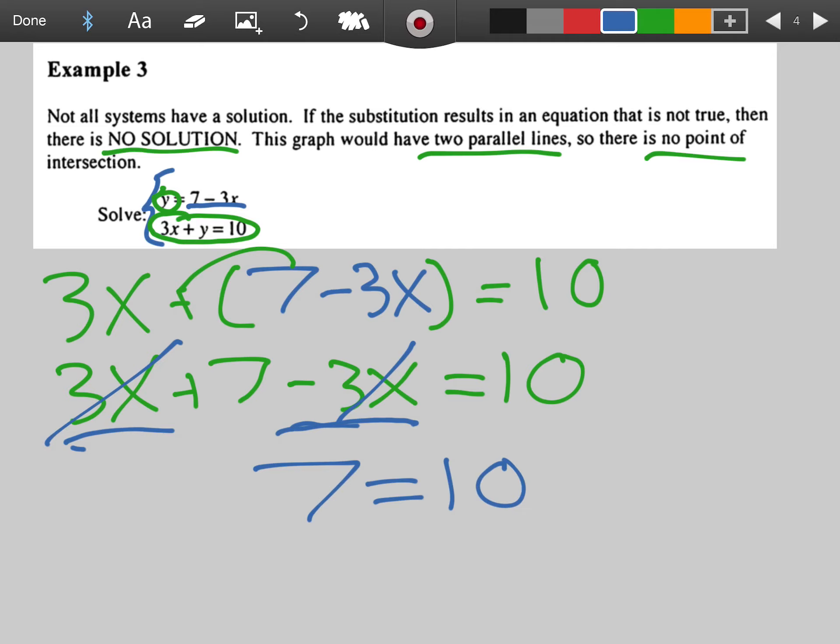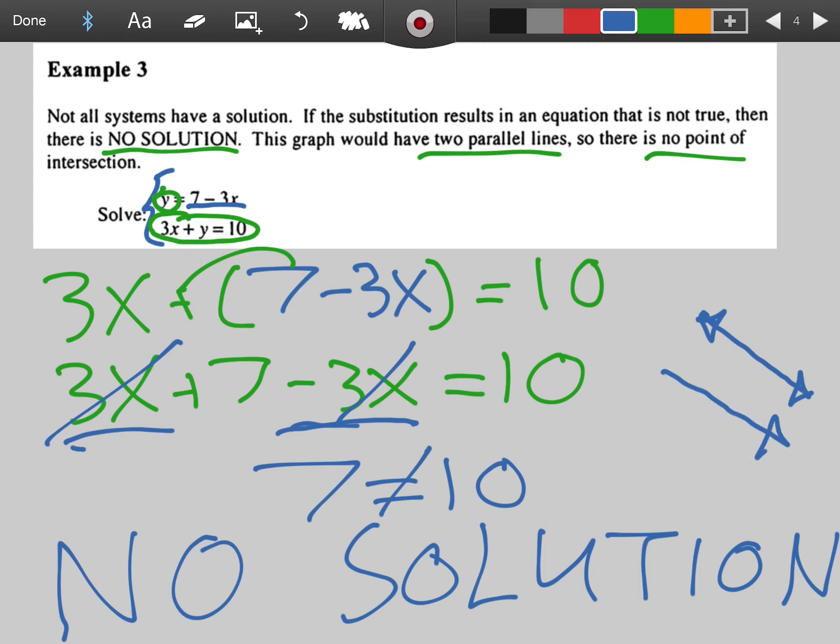Is this a true statement? Does this make sense? No. 7 does not equal 10. So we would actually say there is no solution. If these equations were graphed out, they would behave like so. They would just be parallel lines. This is just a quick sketch, but these would not intersect. Makes sense, right?